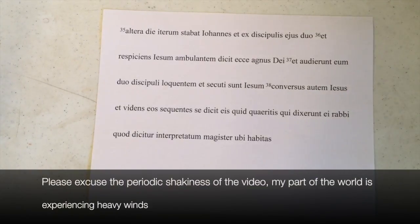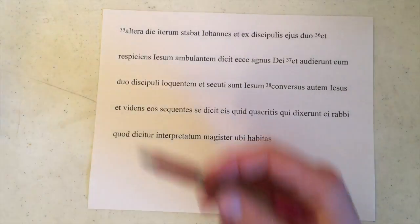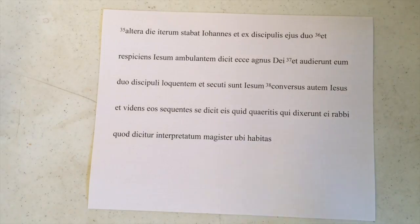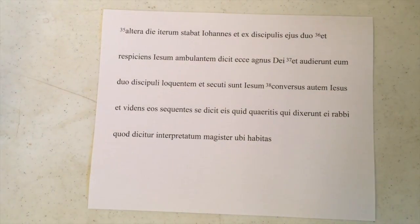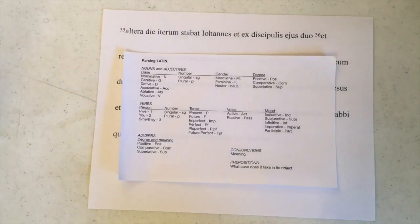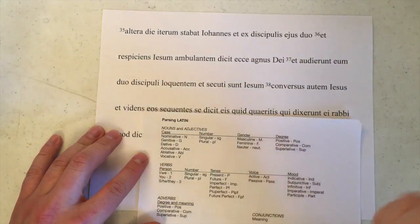Welcome to Parsing John. We are starting today a completely new section in chapter 1. We're going to go from verse 35 through 41 or 42, which means we're getting pretty close to the end. Today we're going to take on both 35 and 36, since they're both very short. Here is our rubric, everything that we're looking for as we go through this text. Let's begin.